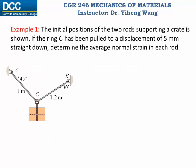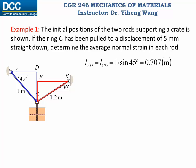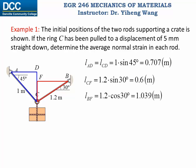Let's look at this example. There are two rods supporting a crate, and the initial positions of the rods as well as their lengths are given. If the ring has been pulled to a displacement of 5 mm straight down, we need to determine the average normal strain in each rod. We know the initial lengths of the two rods, so to find their average normal strain we only need to find their new length after deformation. We'll use two right triangles to help with dimensions, and by trigonometry we can calculate the lengths AD and CD, the length CF, as well as the length BF.